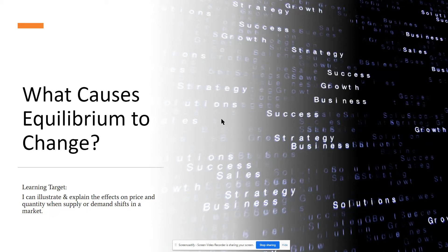This is what causes equilibrium to change. You should be able to illustrate — meaning graph — and then explain the effects on price and quantity when there is a supply or demand shift.